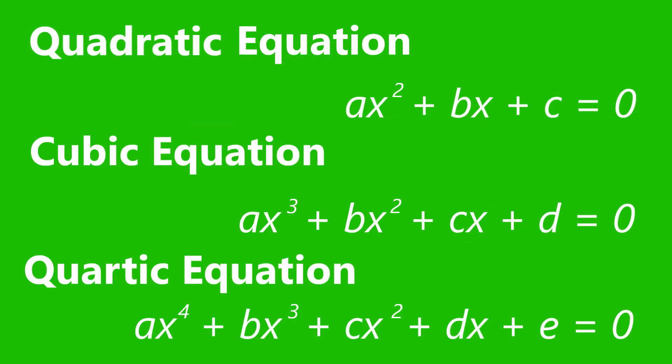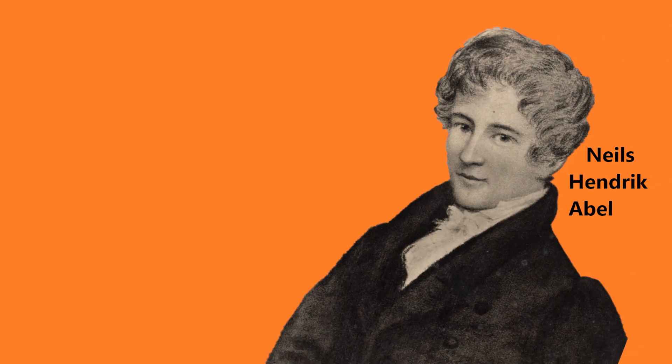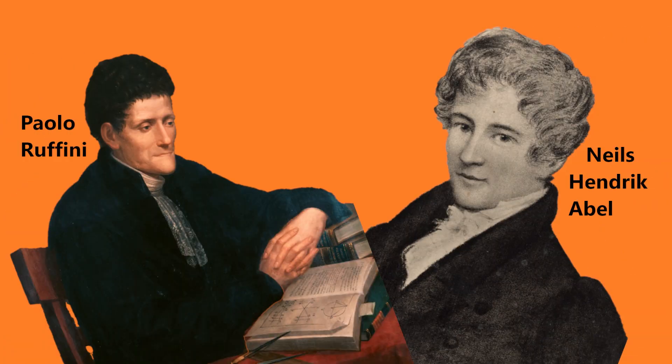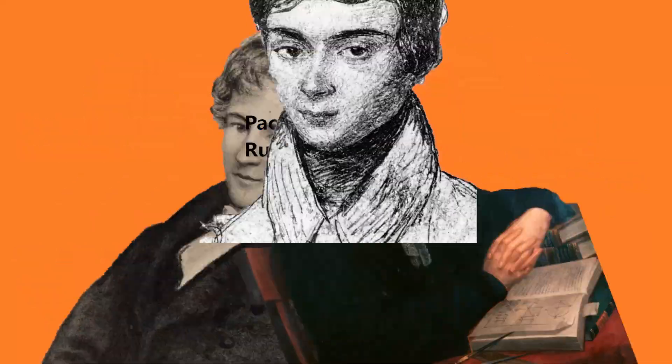It's probably not surprising that formulas to solve general cubic and general quartic polynomial equations have also been discovered. But Niels Hendrik Abel and Paolo Ruffini proved that it was impossible to find such a formula for a general degree 5 or higher polynomial equation. Évariste Galois later developed what is now called Galois theory, which makes it easier to see why this fact is true.